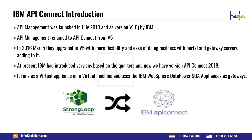IBM API Connect is a gateway product from IBM. It acts as a gateway to existing services. When we say gateway, we mean it functions as a proxy product.